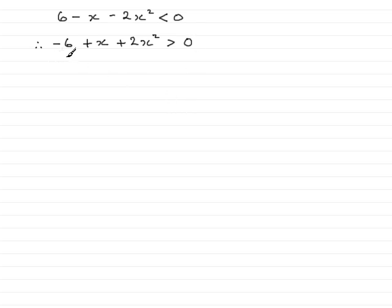Next we have to get this ready for factorising, and personally I always like to start with the x squared term at the front. So we'll put that at the front and we have 2x squared plus x minus 6 is more than 0.